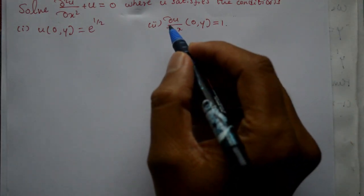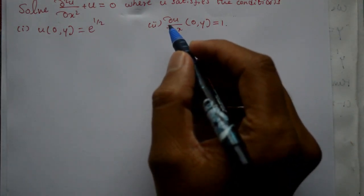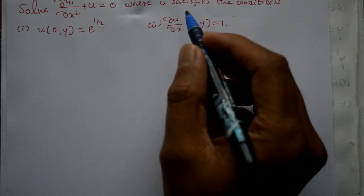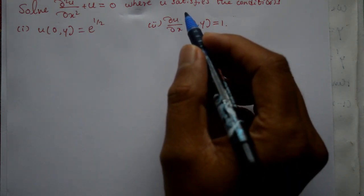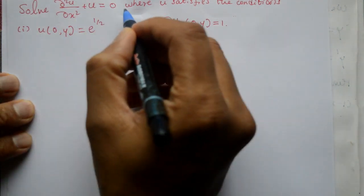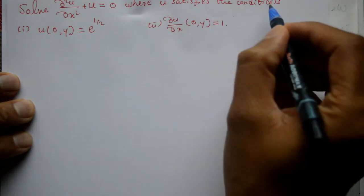This problem we will solve. A problem: solution of homogeneous partial differential equation involving derivatives with respect to one independent variable. Now see, solve ∂²u/∂x² + u = 0 where u satisfies the conditions.